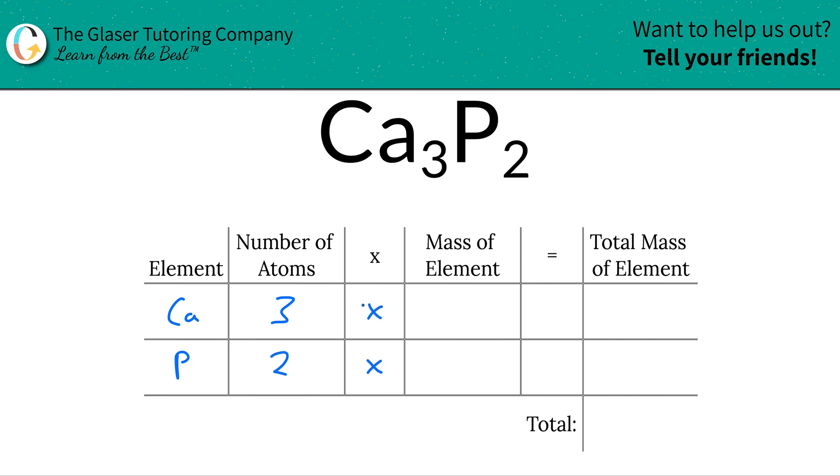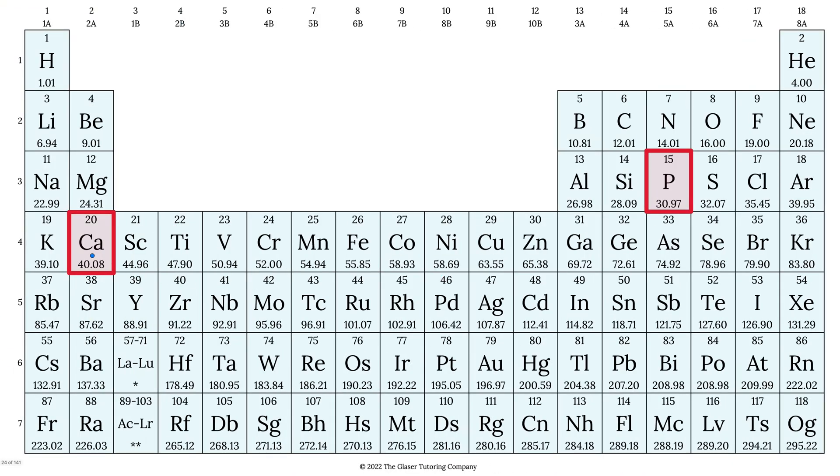So what we're going to do is we're going to take those numbers that we just found and multiply by the mass of each particular element that's found in the periodic table. So let's take a look. So the mass of calcium here is about 40.08 and the mass of phosphorus is about 30.97.